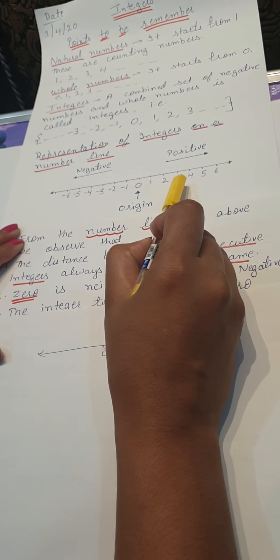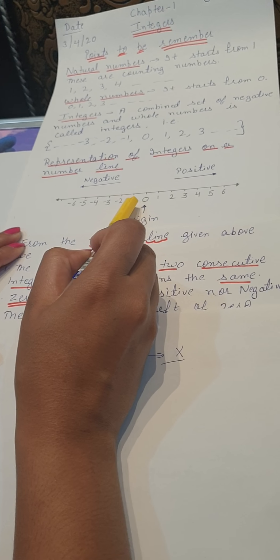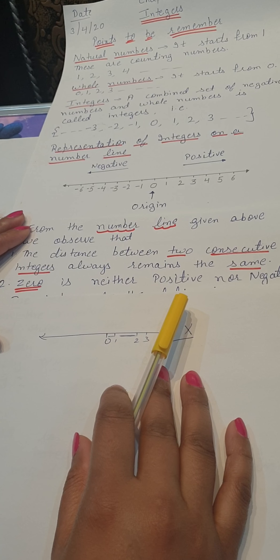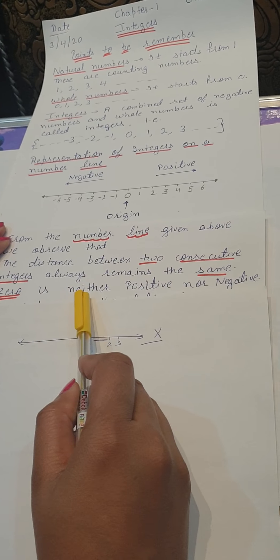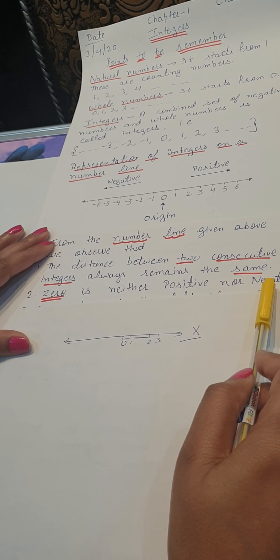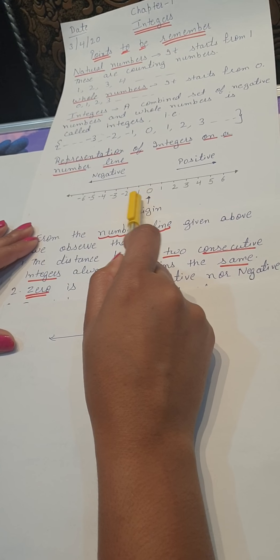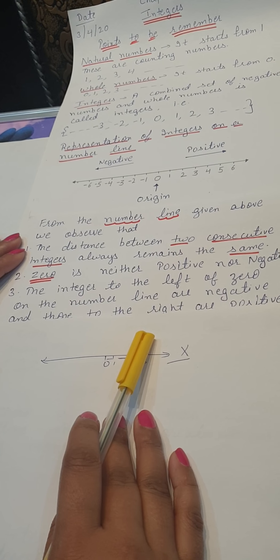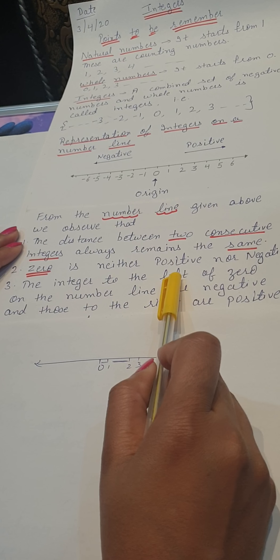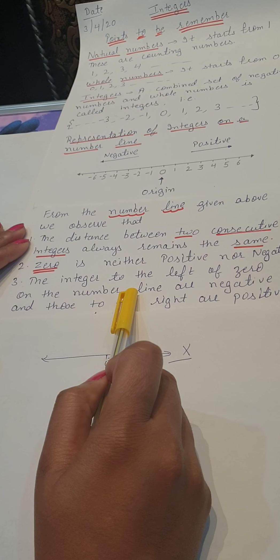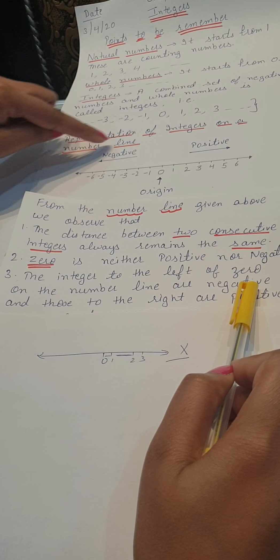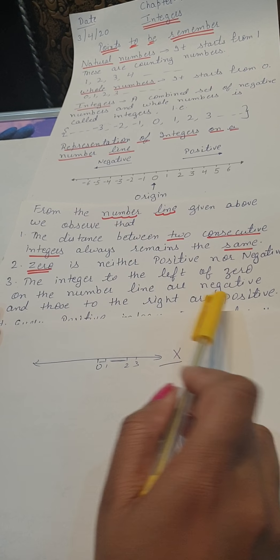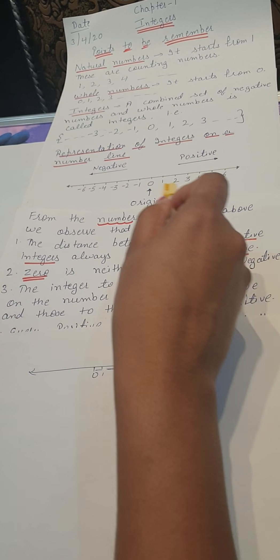So on the number line: 0, 1, 2, 3, 4 on the right, and 0, minus 1, minus 2 on the left — all these distances should be the same. Next point: 0 is neither positive nor negative. Remember this point. The integers to the left of 0 on the number line are negative, and those to the right are positive.